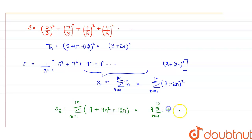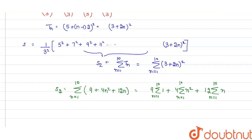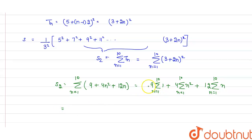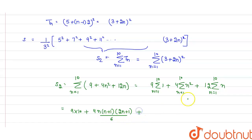This can be rewritten as: 9 × summation of 1 from n=1 to 10, plus 4 × summation of n² from n=1 to 10, plus 12 × summation of n from n=1 to 10. The sum of 1 ten times equals 10, giving 9 × 10 = 90. The sum of squares of first n natural numbers is n(n+1)(2n+1)/6.